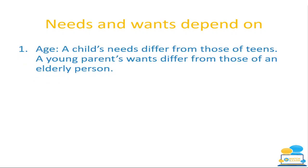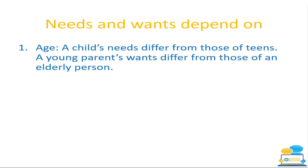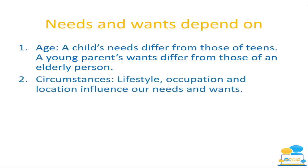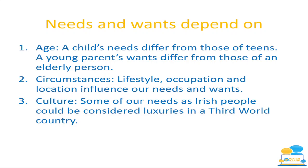Needs and wants depend on a couple of different things — they vary according to age and lifestyle. A child's needs are different from those of a teen, and a young parent's wants are different from those of an elderly person. Circumstances to do with lifestyle, such as income, wages, occupation and location all influence our needs and wants. Even from different parts of Ireland, depending on your location, you might need different things. Culture matters too — some things we consider needs in Ireland are actually luxuries in third world countries.